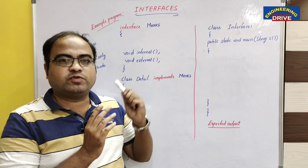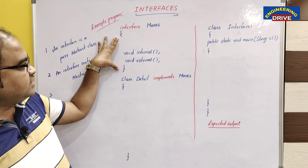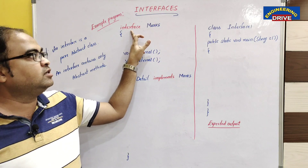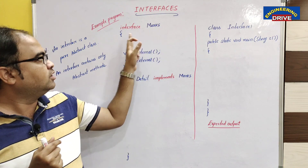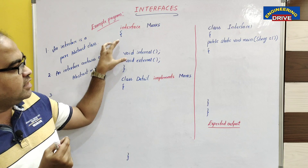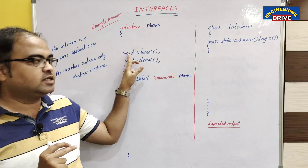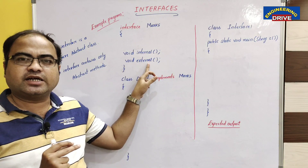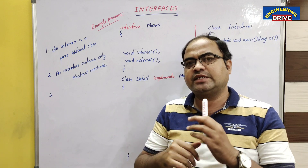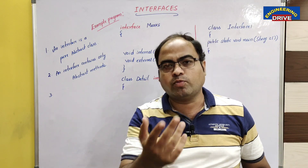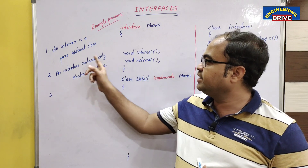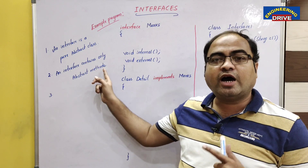In those circumstances, interface will be used. An interface in Java can be written using the keyword 'interface'. For example, the interface name is 'marks' with opening and closing braces. In this interface, there are two methods: 'wide internal' and 'wide external'. These are not concrete methods — they are abstract methods, because they do not have a body. So we can confirm it is an interface because an interface contains only abstract methods.